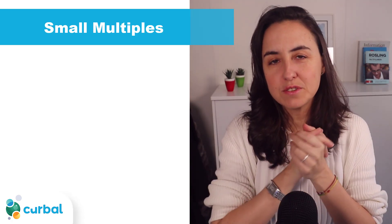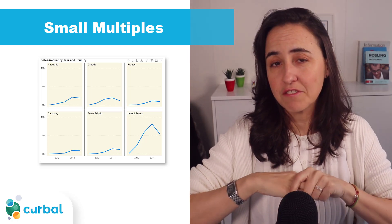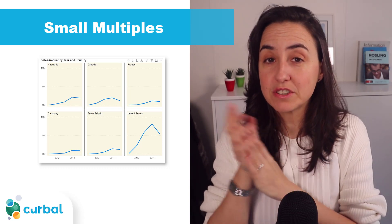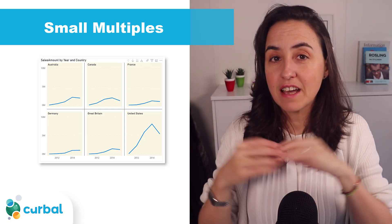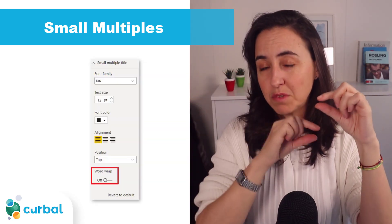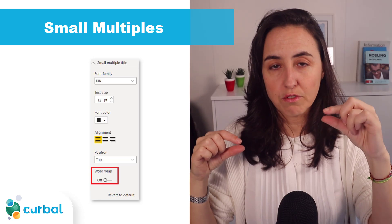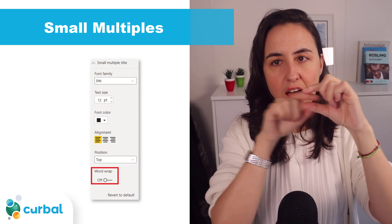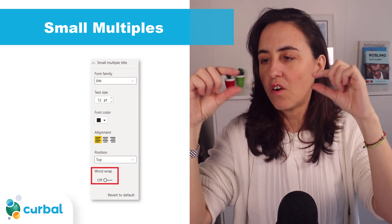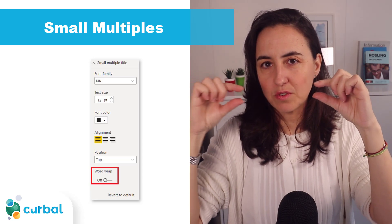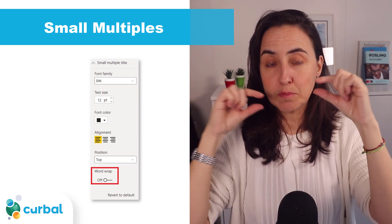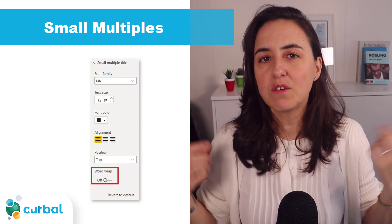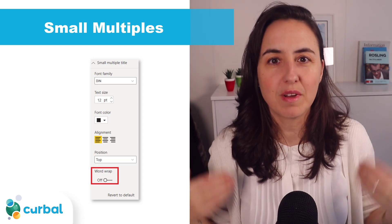There are more updates to small multiples — I love when they add formatting options to visuals. One thing they've fixed is the title: you now have the option to word wrap titles for each small multiple. Be aware though that if you word wrap and one name is longer, all the others will get that same white space, so you won't be able to individually word wrap — it wraps everything uniformly.